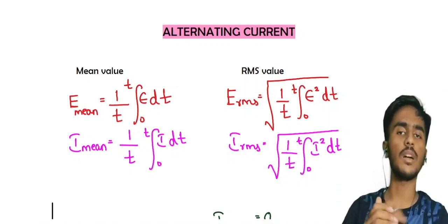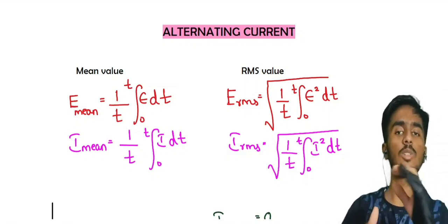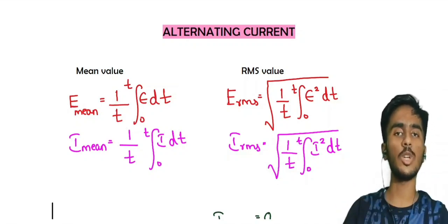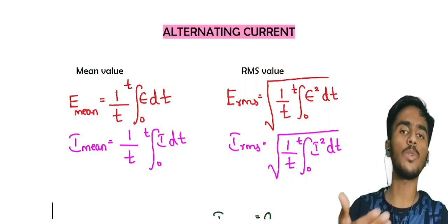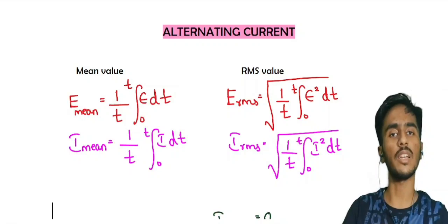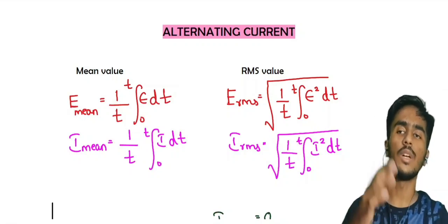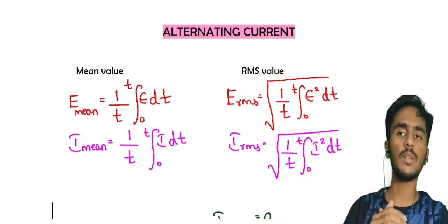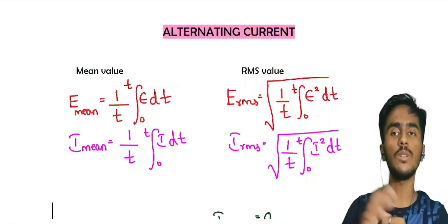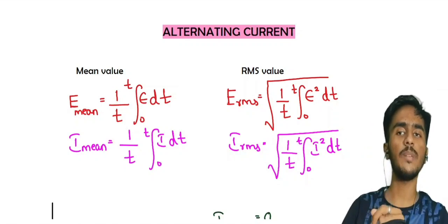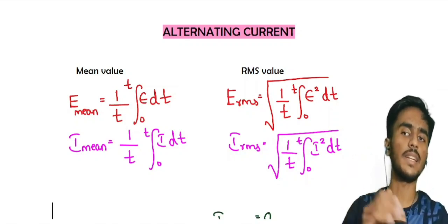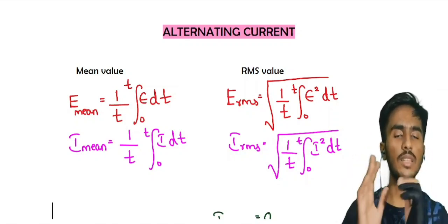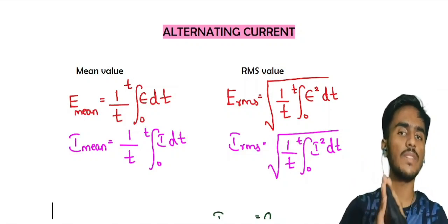RMS value means root mean square — we take the square of the mean value. That is the RMS value. E RMS is equal to root of 1 by T, integration from 0 to T, of E squared dt.